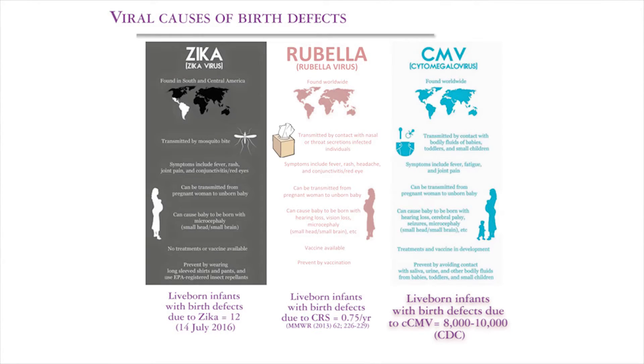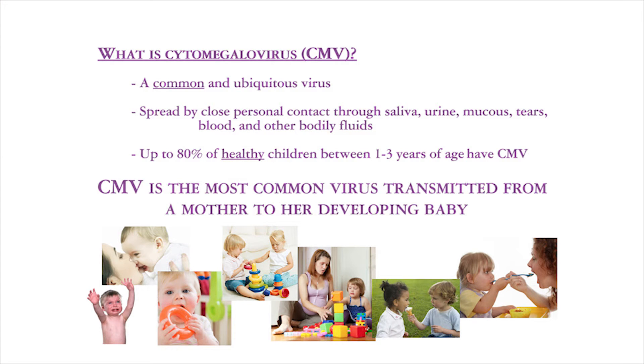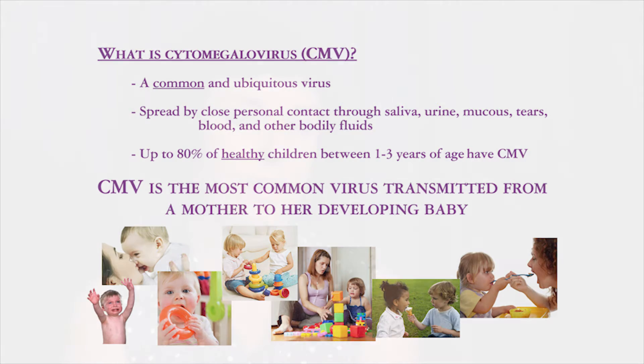Congenital cytomegalovirus is currently the leading viral cause of developmental delays and birth defects in the United States. Approximately 1 in 150 children born every year in the United States are congenitally infected by cytomegalovirus. Congenital means the virus is passed from the mother to the baby in utero, so the baby is infected prior to birth. That equals 40,000 children per year in the U.S.